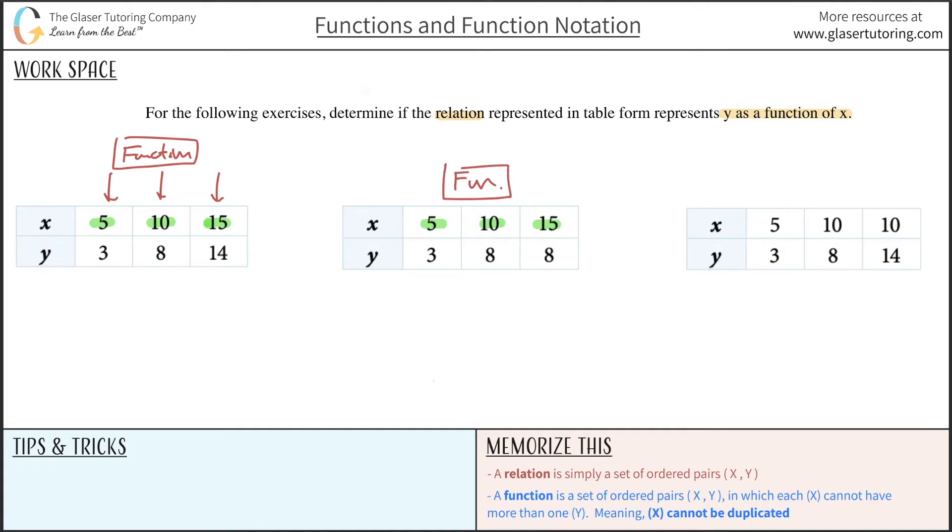And then the last one, it's going to be 5, 10, and 10. Uh-oh. What happened here? So we realize that two of the x values repeat, aka they duplicate, or they are duplicated, and therefore this is not a function,